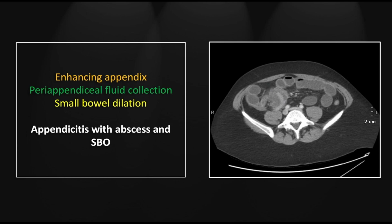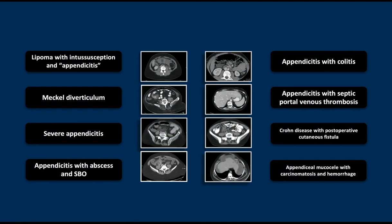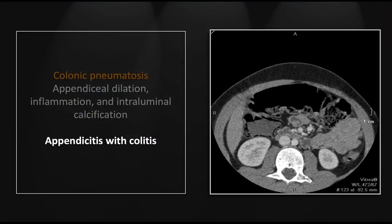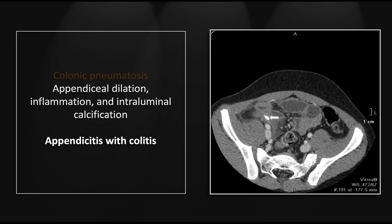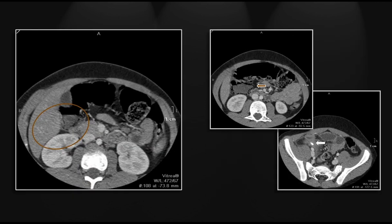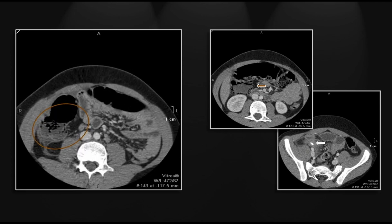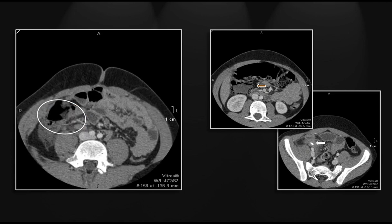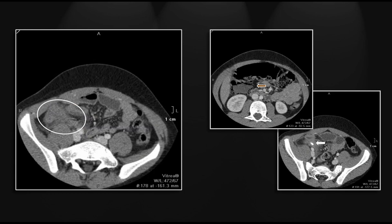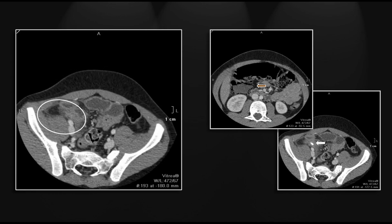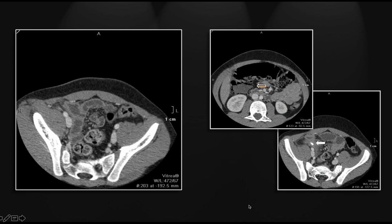Our next case is a severe appendicitis with associated colitis, manifesting as colonic pneumatosis throughout the ascending colon. There is also a dilated appendix with wall thickening, stranding, and an intraluminal appendicolith to effectively confirm the diagnosis of primary appendicitis. Here is the pneumatosis throughout the ascending colon, and inferior to the cecum, you'll see the dilated thick-walled appendix with the associated appendicolith. That is appendicitis with ascending colitis.